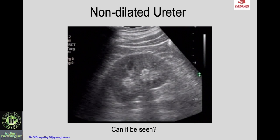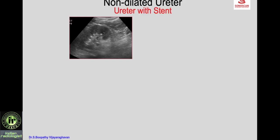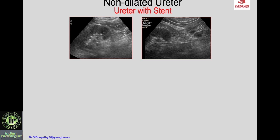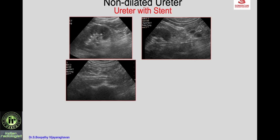When the ureter is non-dilated, can it be seen and traced? Yes. To start, it is better to begin with a dilated ureter to learn the transducer movement. You can also try with a stent in place — you can see the stent in the renal pelvis and upper ureter, and by tracing the stent you can memorize the transducer movement to see the non-dilated ureter.